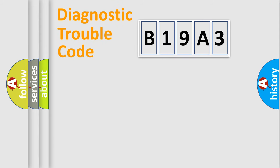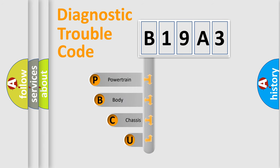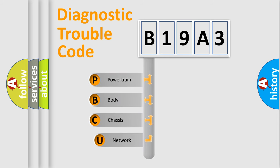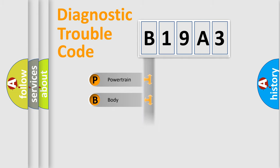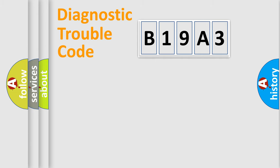Let's do this. First, let's look at the history of diagnostic fault code composition according to the OBD2 protocol, which is unified for all automakers since 2000. We divide the electrical system of an automobile into four basic units: Powertrain, Body, Chassis, and Network.